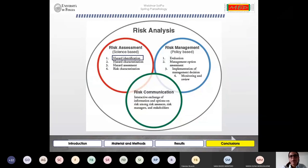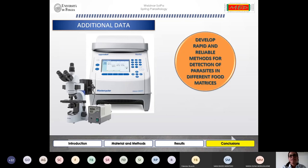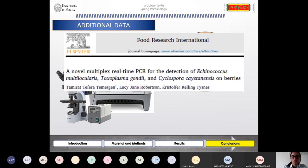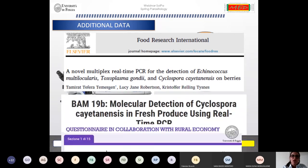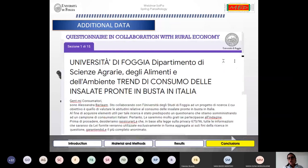In order to do that, there is a long path which starts with risk assessment, which is science-based, which means that in order to reach this goal, we have to gather additional data and develop rapid and reliable methods for the detection of parasites in different food matrices, which is exactly what we have done in this study.